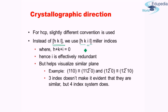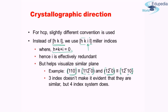The key constraint is that h plus k plus i must always equal zero. So in effect we still end up with three independent Miller indices — we have just added a redundant index i. But what is the logic behind it? hk and l alone are sufficient to carry out the task, so why add a fourth?